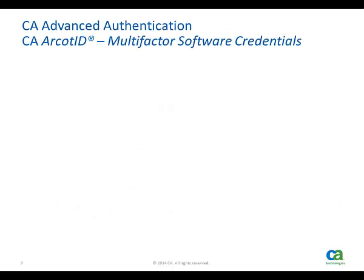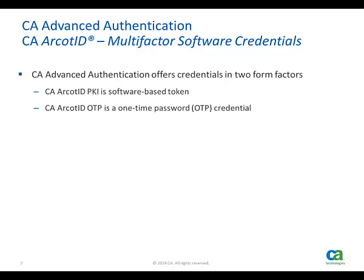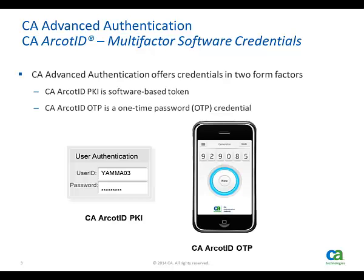The benefits of the CA Arcot ID credentials are that they are software-based and come in two form factors: username and password equals the Arcot ID PKI, and Oath Standard OTP equals the CA Arcot ID OTP. You can tie credentials to devices, meaning they cannot be moved and used to generate valid credentials from devices other than the ones they were originally provisioned to. Both credentials work on all types of devices — PCs, Macs, tablets, and phones.